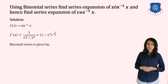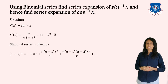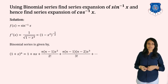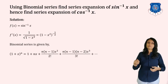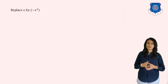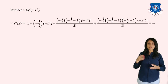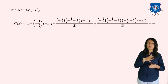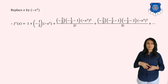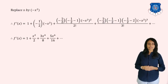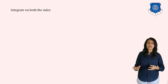We write 1/√(1−x²) as (1−x²)^(−1/2) and compare with the binomial series (1+x)^n = 1 + nx + n(n−1)x²/2! + … On comparing, in place of x we have −x², and in place of n we have −1/2. Substituting these into the formula, we get f'(x) = 1 + (−1/2)(−x²) + [(−1/2)(−1/2−1)(−x²)²]/2! + … On simplification: f'(x) = 1 + x²/2 + 3x⁴/8 + 5x⁶/16 + … To convert to f(x), we integrate.